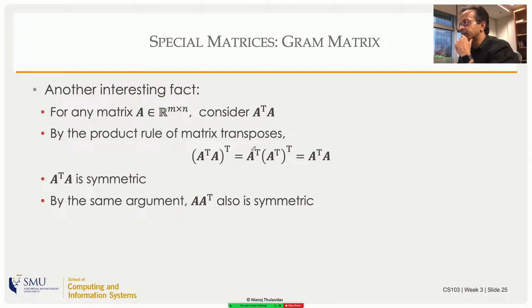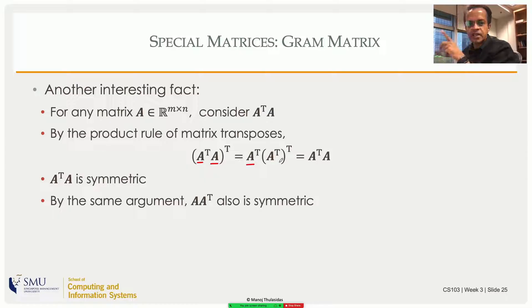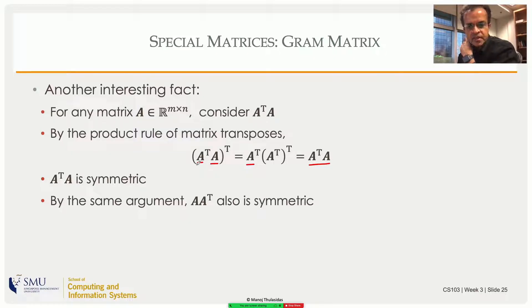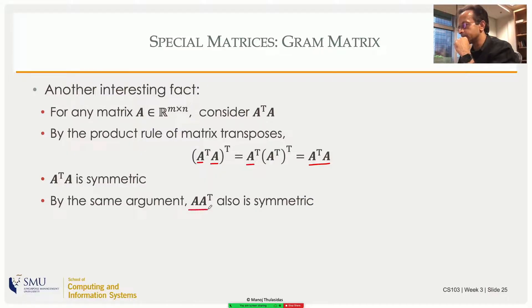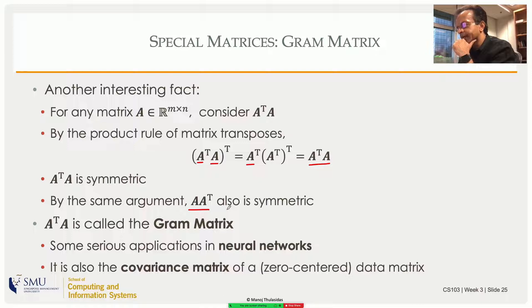Are A-transpose A and A A-transpose symmetric matrices? If you transpose A-transpose A, you swap the order and get A-transpose times A-transpose-transpose, which is A-transpose A — the same as what you started from. So A-transpose A is symmetric. We already saw it's square, but it's better than that: it's actually symmetric. By the same argument, A A-transpose is also symmetric.